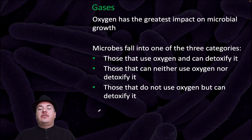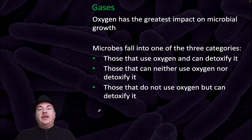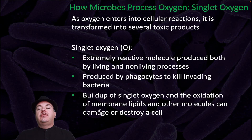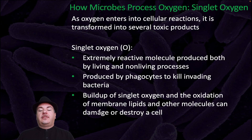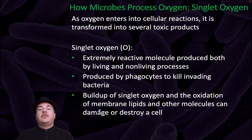Out of the gases, oxygen has the greatest impact on microbial growth. Microbes fall into one of three categories: those that use oxygen and can detoxify it, those that can neither use oxygen nor detoxify it, and those that do not use oxygen but can detoxify it. As oxygen enters into cellular reactions, it is transformed into several toxic products. Singlet oxygen is an extremely reactive oxygen molecule produced by both living and non-living processes, and is produced by phagocytes to kill invading bacteria. Buildup of singlet oxygen and the oxidation of membrane lipids and other molecules can damage or destroy a cell.